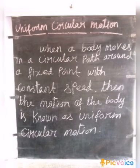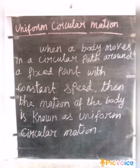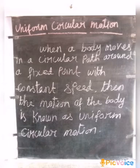Uniform Circular Motion: When your body moves in a circular path around a fixed point with constant speed, then the motion of the body is known as Uniform Circular Motion. The body moves in a circular path, the speed is constant — that is Uniform Circular Motion.